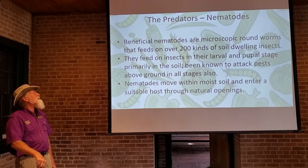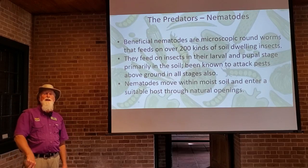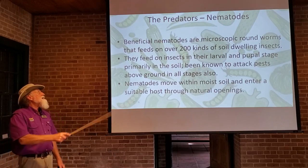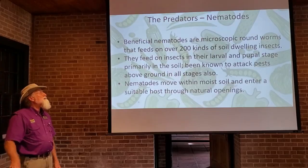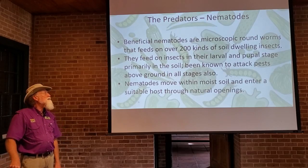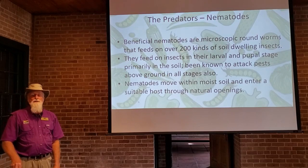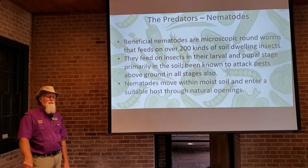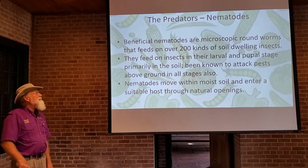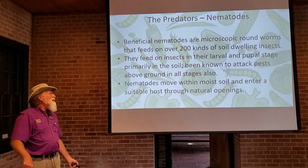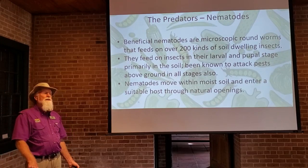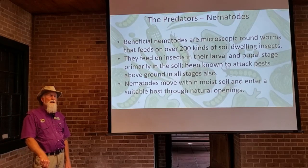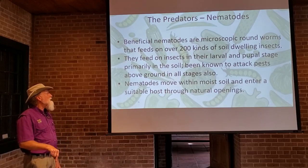The next group of predators are the nematodes — very tiny microscopic worms. There are over 200 kinds of soil-dwelling insects that beneficial nematodes will feed on. Most nematode activity takes place in the soil, where they feed on the larvae and pupal stages of insects. Sometimes they will attack pests above ground, but in general they are in-ground feeders, moving through moist soil.